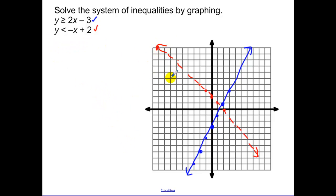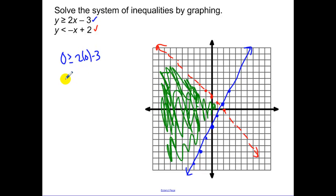For the red line we're shading below because we're less than. So above the blue line but below the red line is everything in here. To make sure you've shaded the correct area, test one point in that area. Zero, zero is in that area. Is zero greater than or equal to two times zero minus three? Zero greater than or equal to negative three? Yes, that works. Zero less than negative zero plus two? Zero is less than positive two? Yes. So we shaded the correct area.